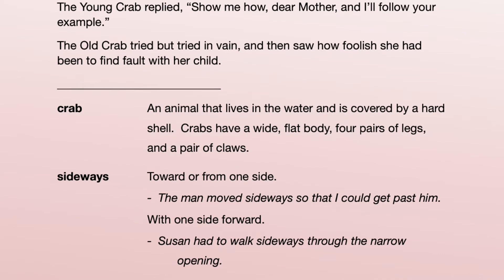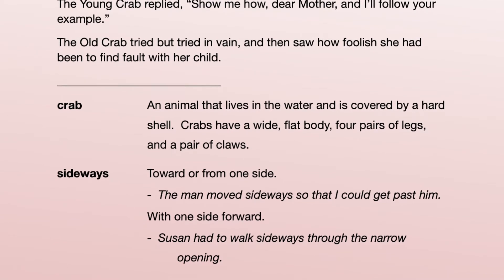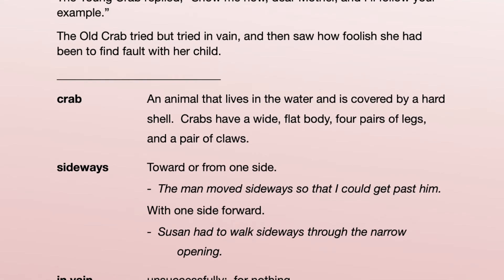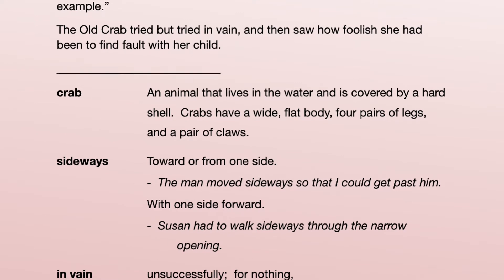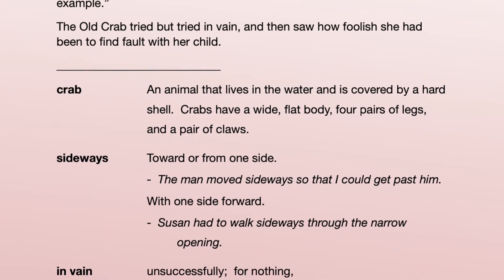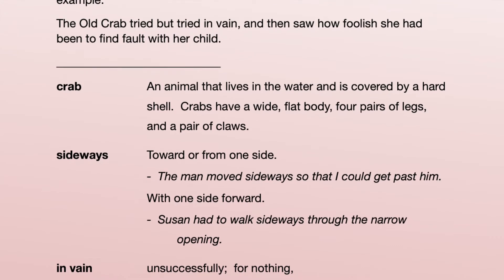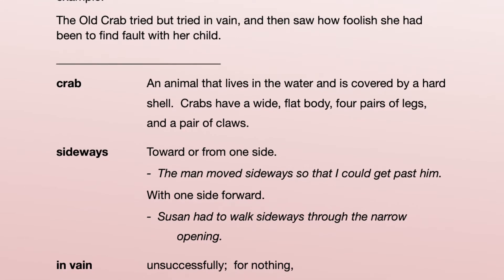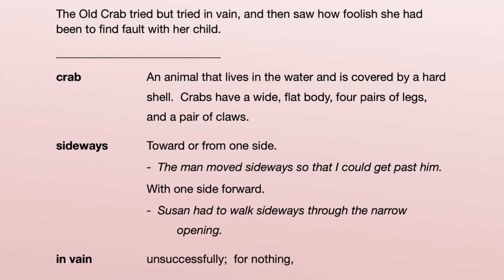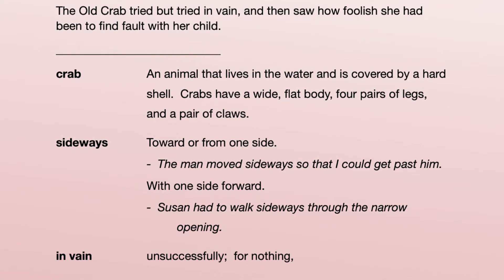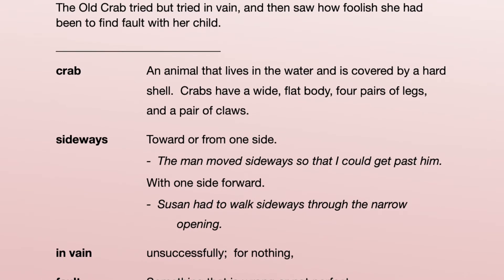Crab is an animal that lives in the water and is covered by a hard shell. Crabs have a wide, flat body, four pairs of legs, and a pair of claws.